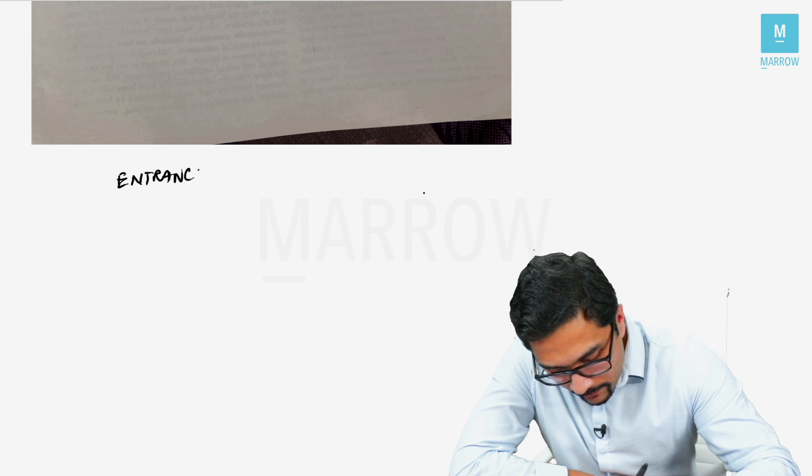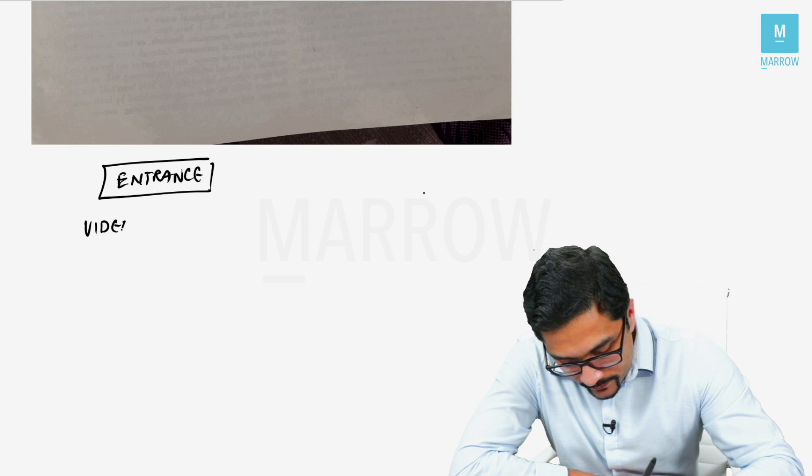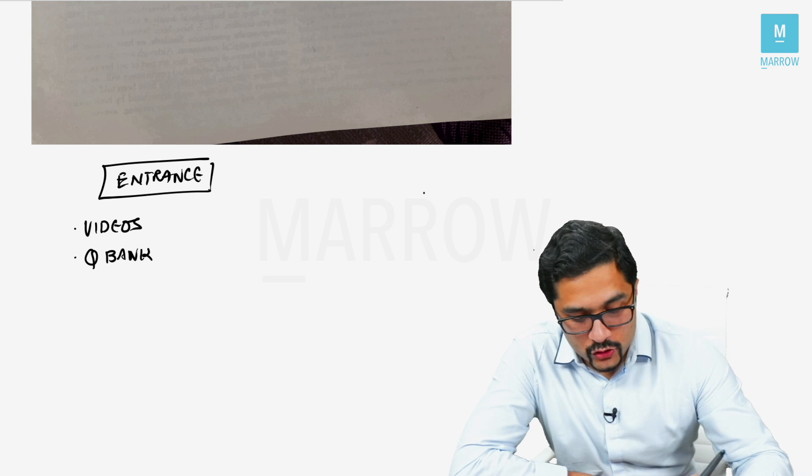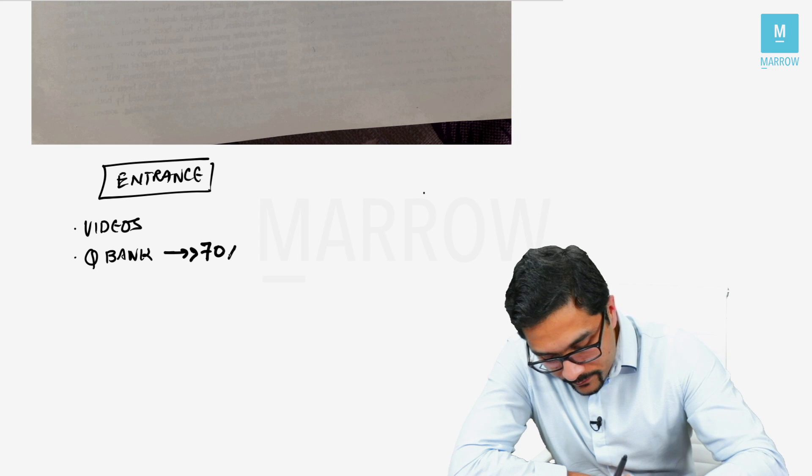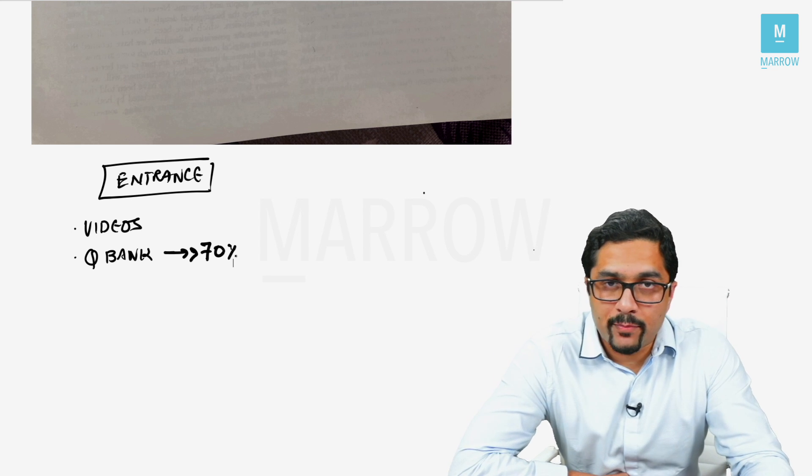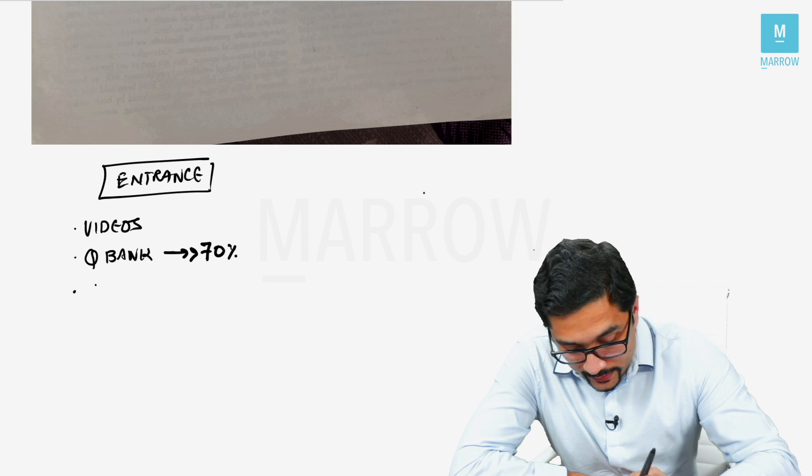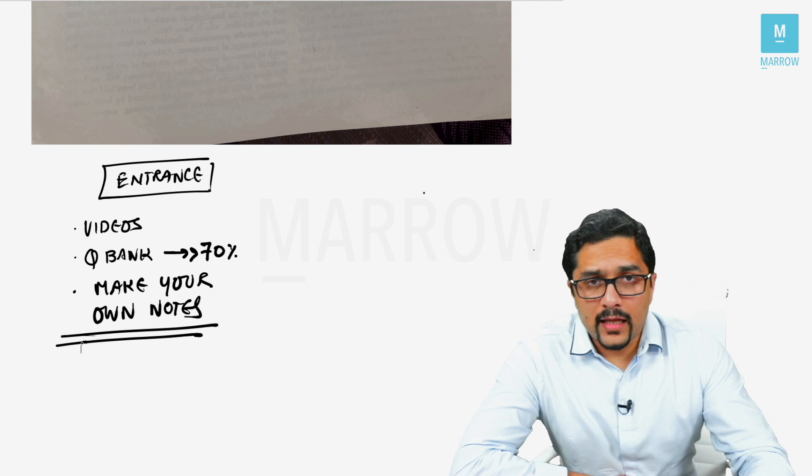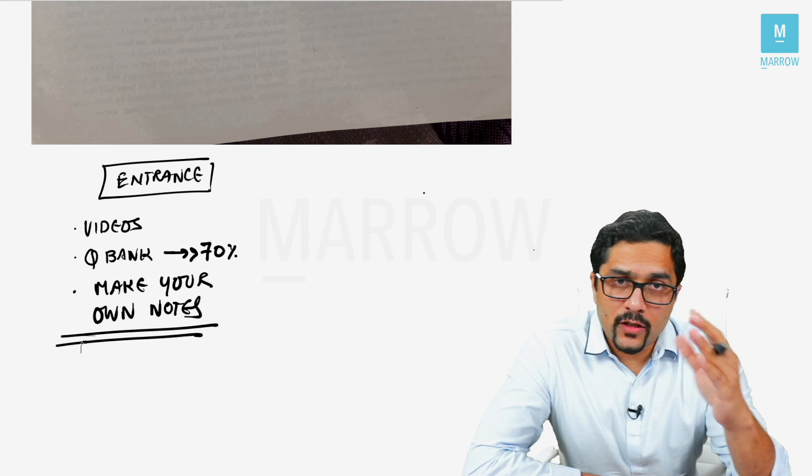Now coming to people who are preparing for the entrance exam: how are you going to approach Marrow 4.0 surgery? My request to you would be to watch the videos and solve the Marrow Q bank. When you're solving the Q bank, your aim should be to target more than 70%. If you're getting more than 70 to 75%, that means you've understood the concept. Also, I would recommend that you make your own notes, because only when you make your own notes will you understand things. Otherwise, if you're just reading notes from elsewhere, then the retention power is not there.